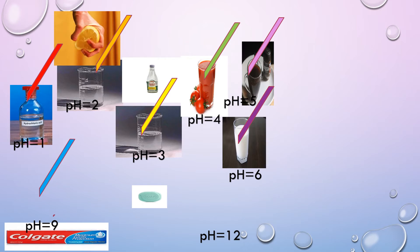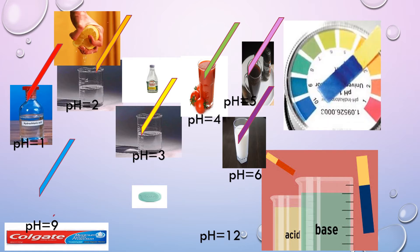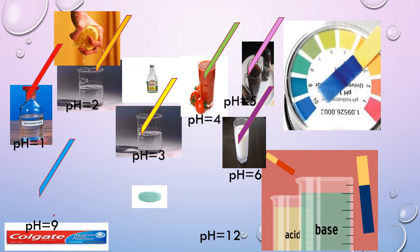Different solutions have different pH values. If you dip a pH paper into an HCl solution, its color will change to red, which indicates that its pH is equal to 1. If you dip the pH paper in lemon solution, it will change to a slightly yellow color, indicating that its pH is 2.